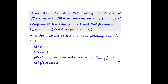We can construct an orthogonal set u1, u2, …, un from a linearly independent set v1, v2, …, vn such that for any k from 1 to n, the set {u1, u2, …, uk} is a basis for the linear span of {v1, v2, …, vk}. Starting with i = 1, set u1 = v1. Then increment i; if i > n, stop. Otherwise, set ui = vi - Σ_{j=1}^{i-1} (⟨vi, uj⟩ / ‖uj‖²)·uj, and repeat.